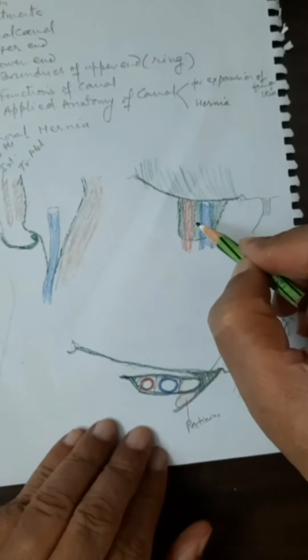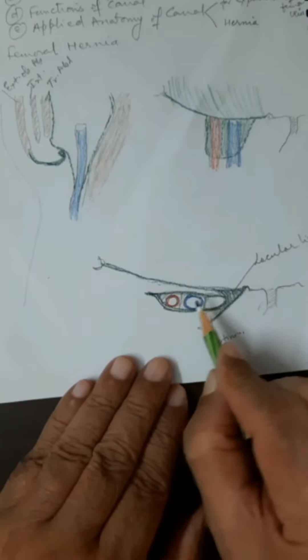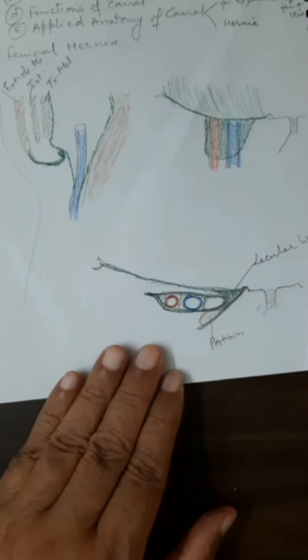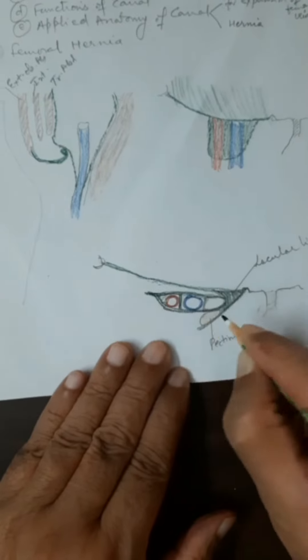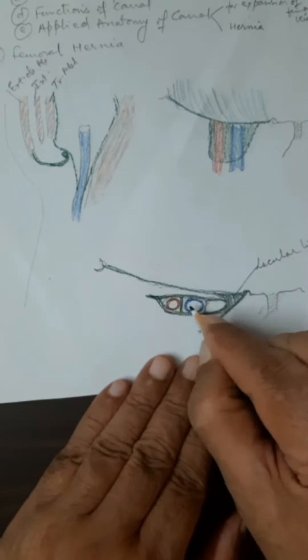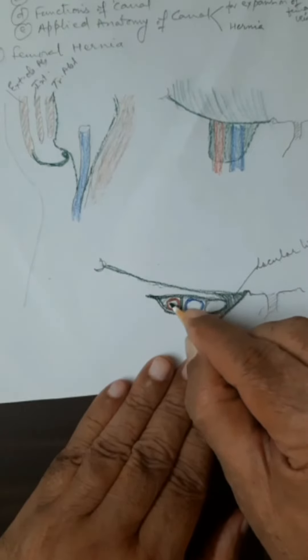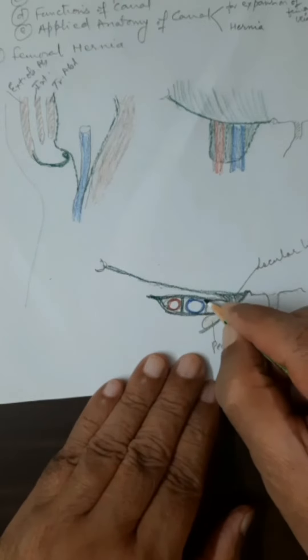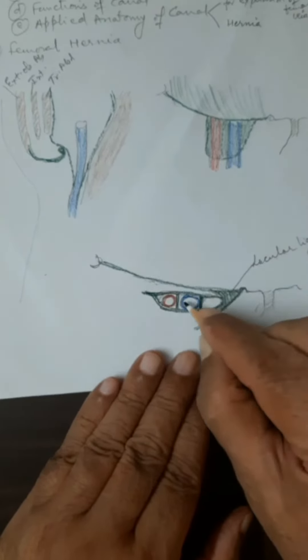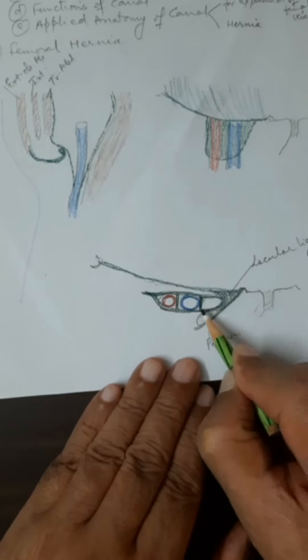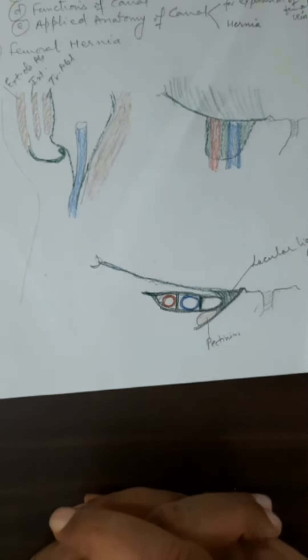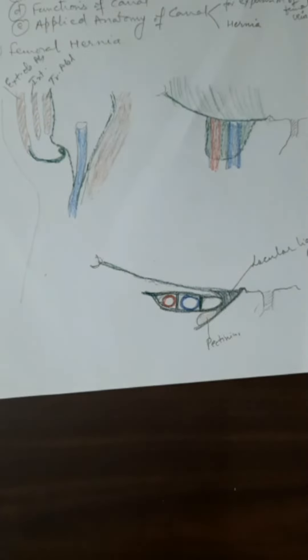This funnel-shaped femoral sheath, in transverse section, is divided into three compartments by septa. There is a lateral septum passing between fascia iliaca and fascia transversalis, separating the vein from the artery. Then there is a medial septum separating the middle compartment containing the femoral vein from a medial compartment which is an empty compartment.